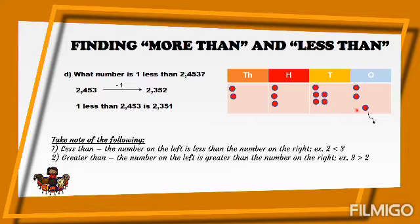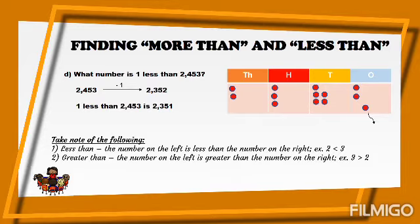Take note of the following. 'Less than' means the number on the left is less than the number on the right — for example, two is less than three. 'Greater than' means the number on the left is greater than the number on the right — for example, three is greater than two. When comparing numbers, we always compare from left to right. Never compare from right to left — you must follow this rule.